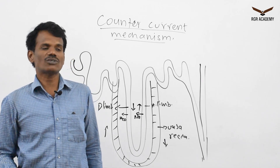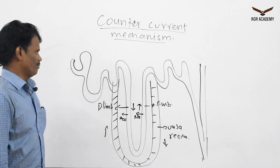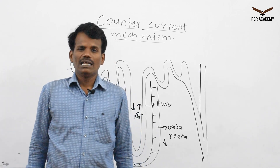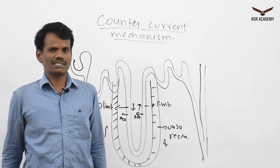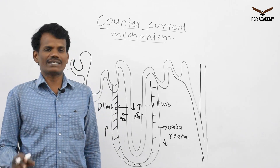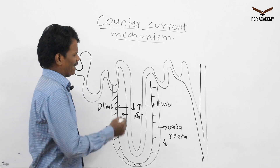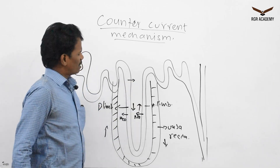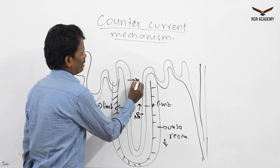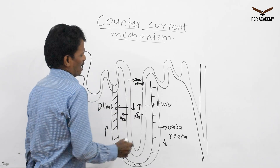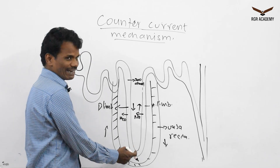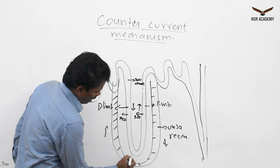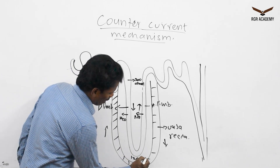The osmolarity refers to the number of solute particles in a solvent. When the glomerular filtrate comes to the cortex region, it is 300 osmol. When it reaches the medullary region of the kidney, the osmolarity is 1200 osmol.